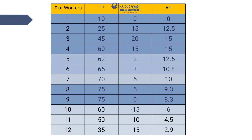The fourth worker brings total output to 60, so 60 minus 45 equals 15 — the fourth person brought in 15. In this way we calculate marginal productivity. For average productivity, the formula is per-head productivity: total product divided by number of workers. So one person gives 10 divided by 1 equals 10; two workers give 25 divided by 2 equals 12.5; three workers give 45 divided by 3 equals 15. Each additional worker is bringing more average productivity into the firm.